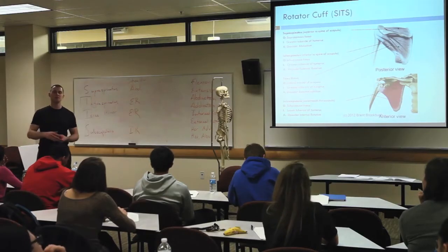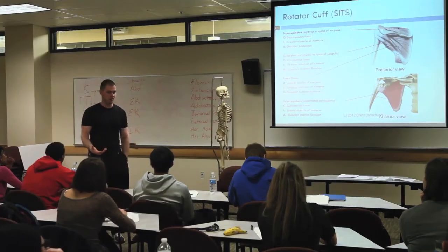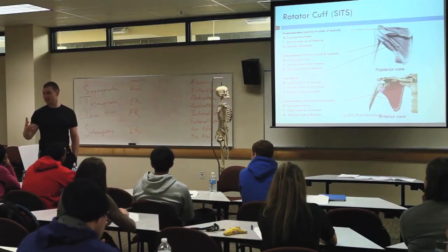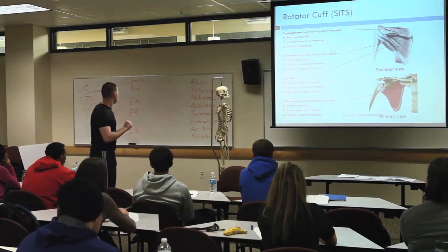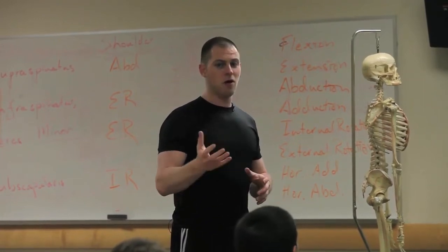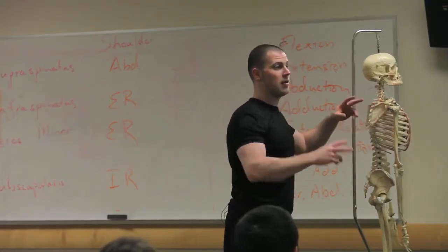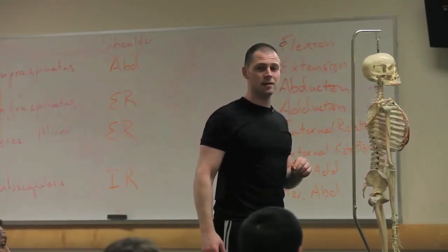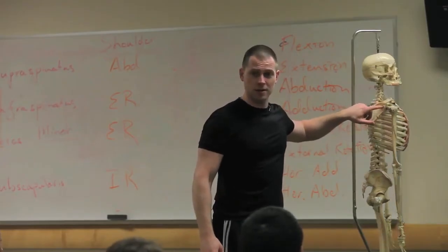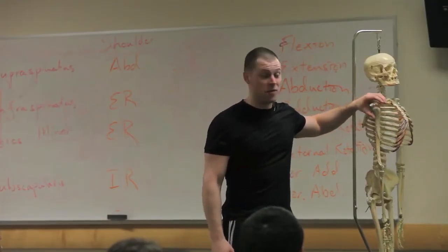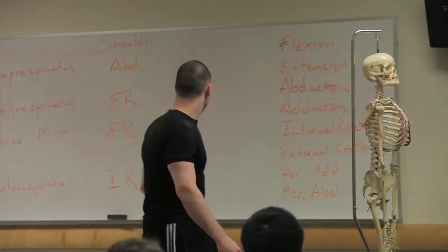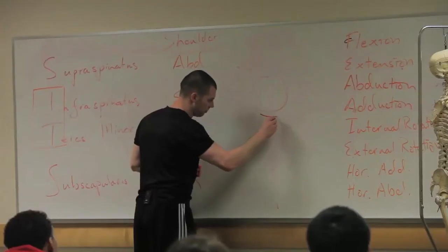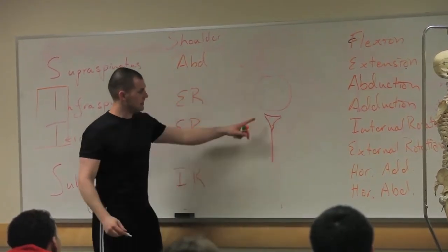Now a little aside, just to teach you guys about muscular function so you understand why you're learning all this stuff. The interesting thing about the rotator cuff muscles is yes, those are the joint actions, and they'll do some other joint actions in advanced kinesiology, but that's not the primary function of the rotator cuff. To call the glenoid fossa a shoulder socket is a little unfair. Does that look like something the humeral head is just totally buried in? It would be a better analogy to call it a golf ball and tee joint — that's about how much support the humeral head has.